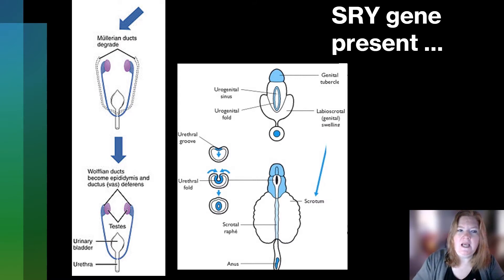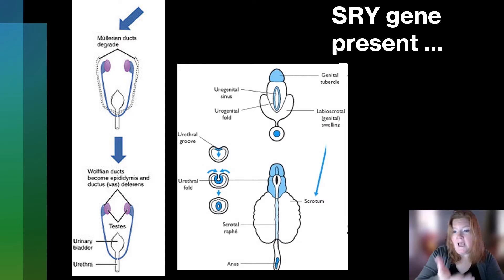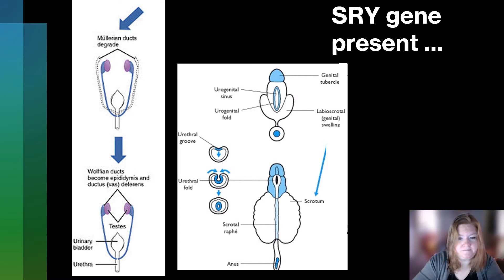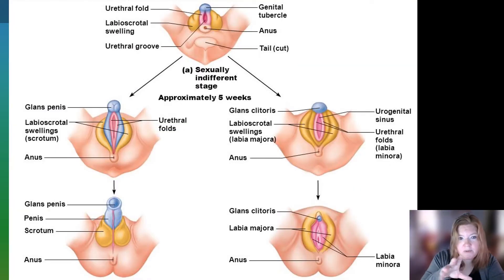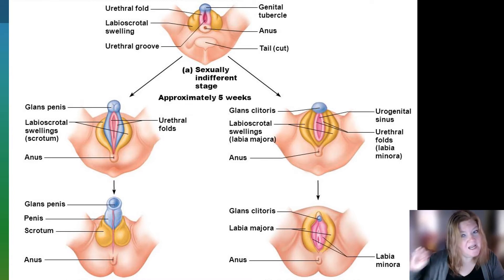What happens is certain ducts that would be responsible for developing fallopian tubes and ovaries are going to degrade. And the ducts that are responsible for the vas deferens and the testes are going to continue developing. Then the external genitalia develops into a penis and a scrotum. Before six weeks, every embryo is going to look the same in terms of reproductive system, and then differentiation is going to happen.